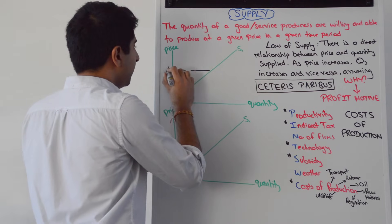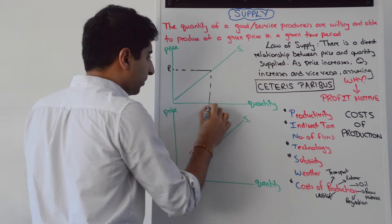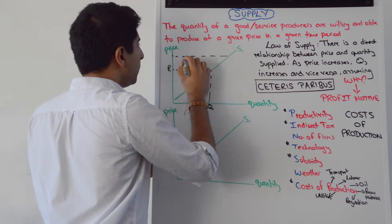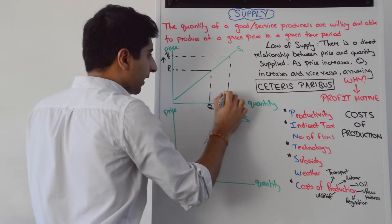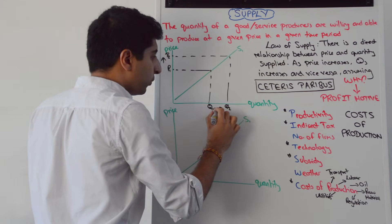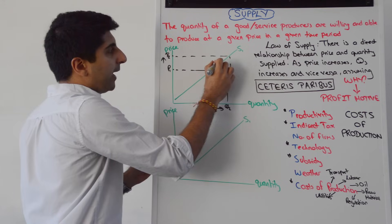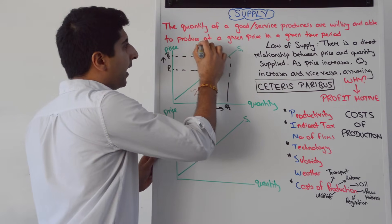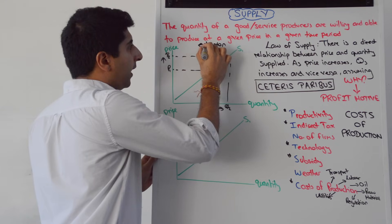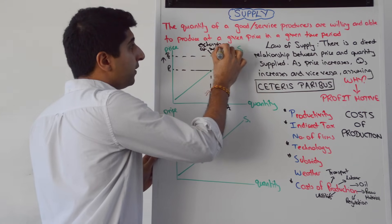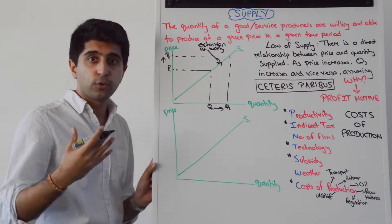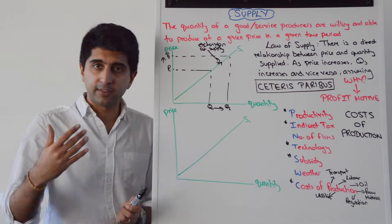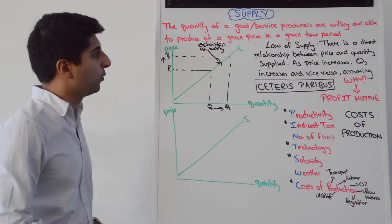We'll start with the price of P1, which gives us a quantity supplied of Q1. As the price increases from P1 to P2, you can see that quantity supplied has increased. That is called an extension of supply — if supply increases by moving along the supply curve, that's called an extension. Another name is an expansion of supply.